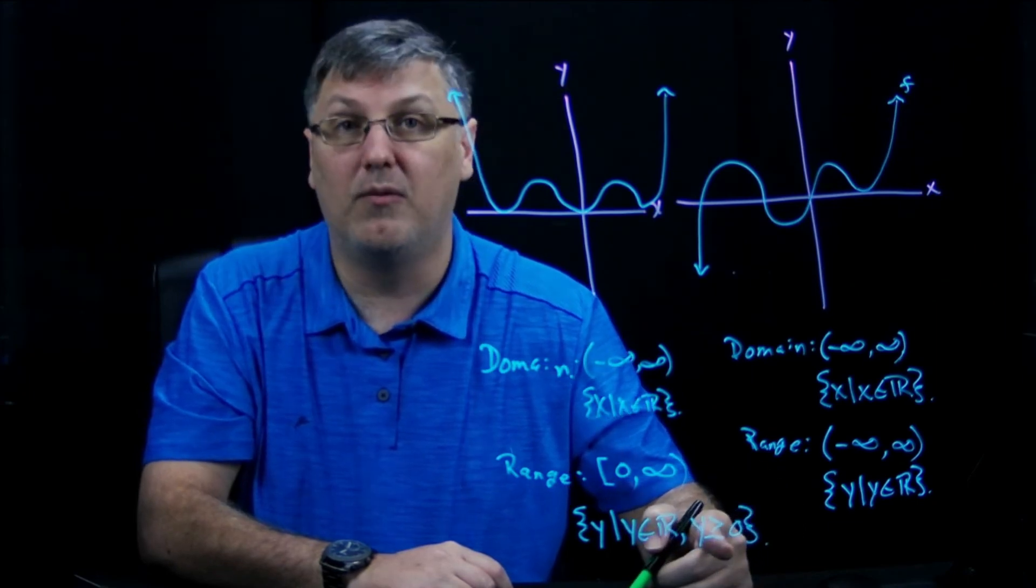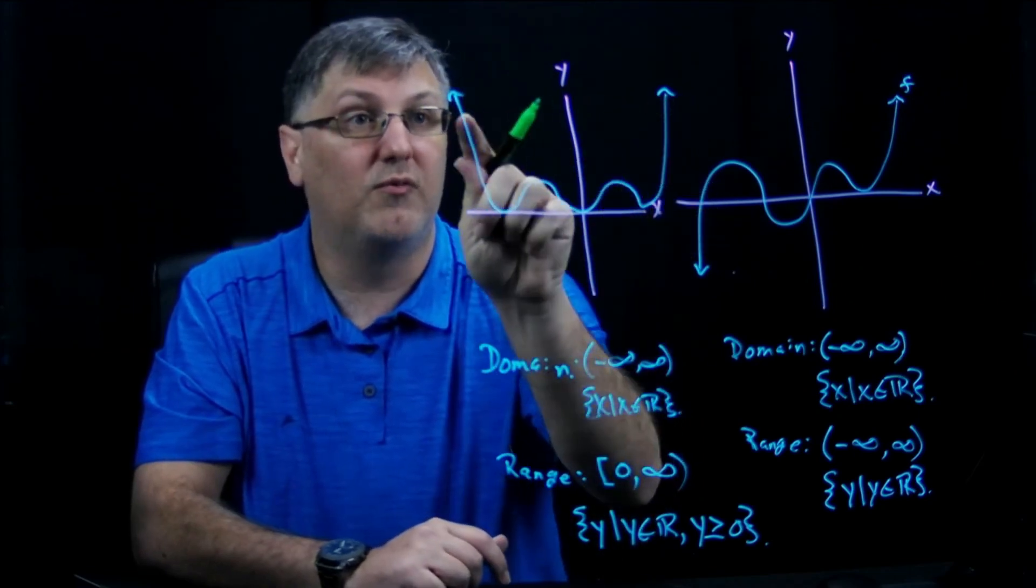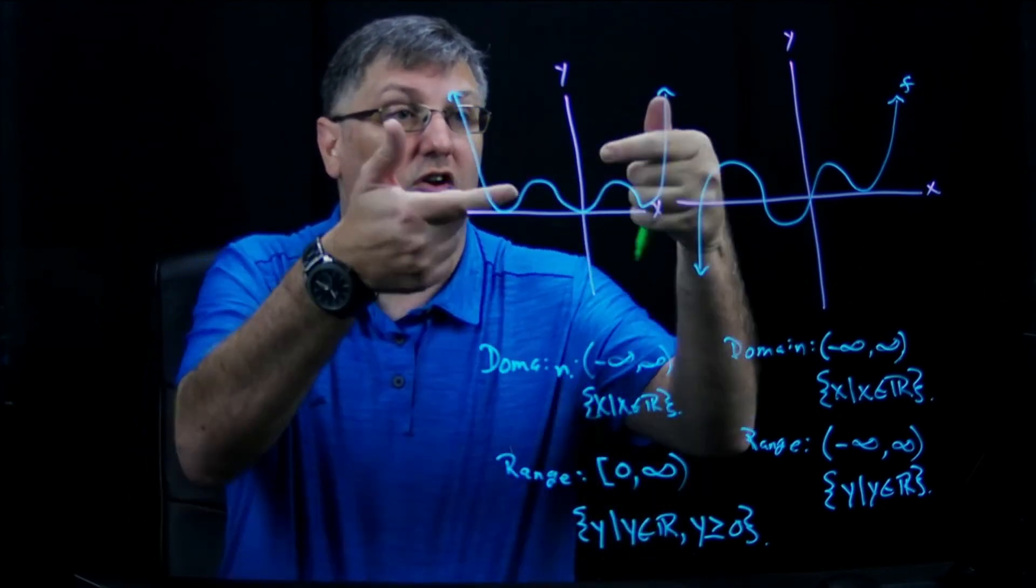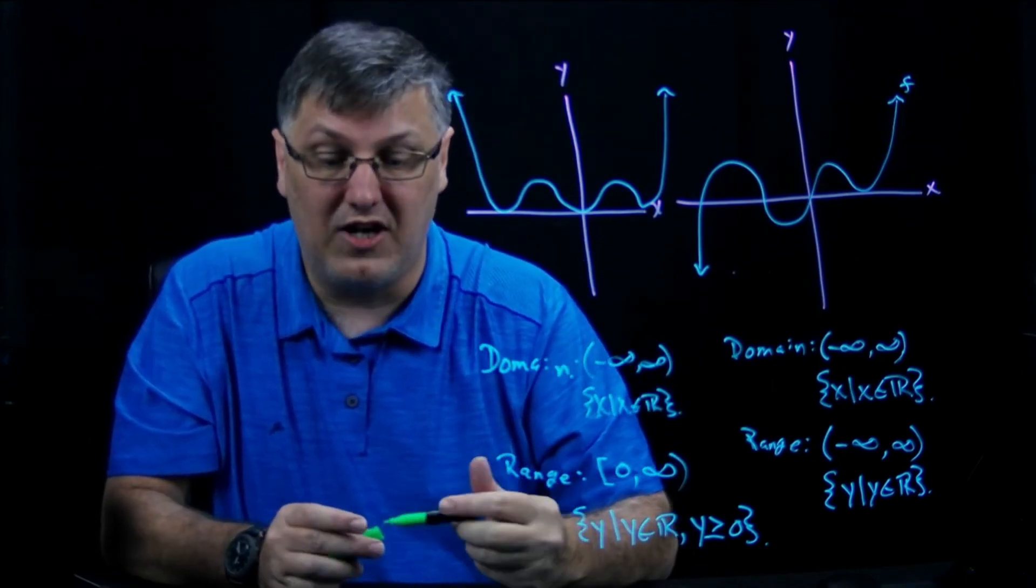Basically, it tells me every number above 0. So from here, every number going up, which we can see from the end behavior. Now, this could also be turned down. These could be flipped around. Graphically, finding domain and range is not terribly bad.